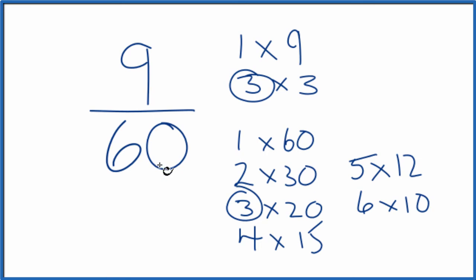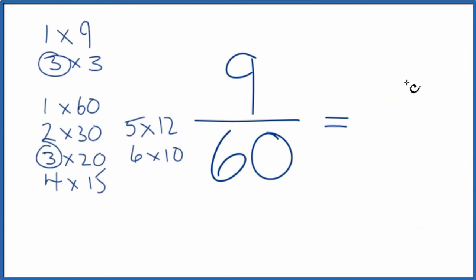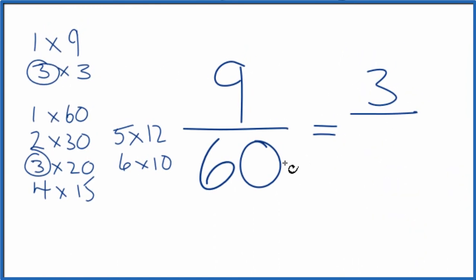So we'll divide 9 by 3, 60 by 3, and then we'll have simplified 9 over 60. Let's move these over here. So 9 divided by 3, that's 3. 60 divided by 3, that's 20.